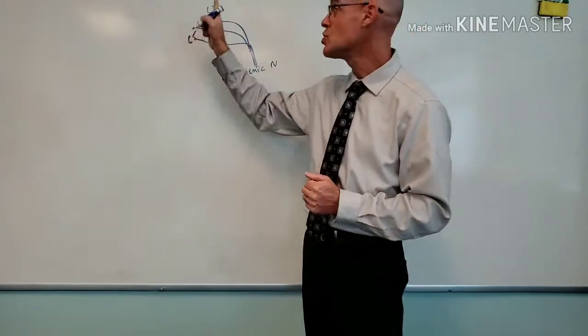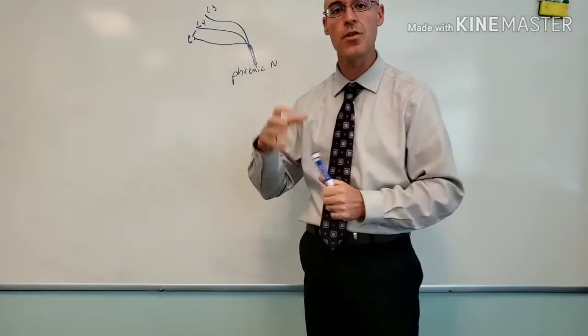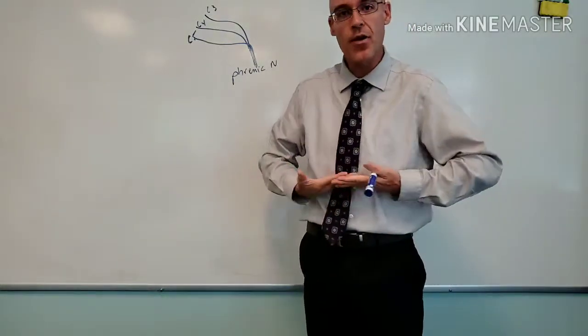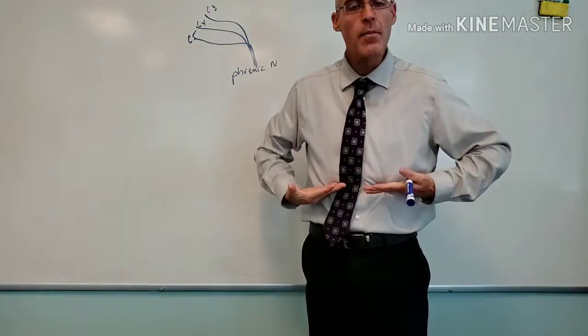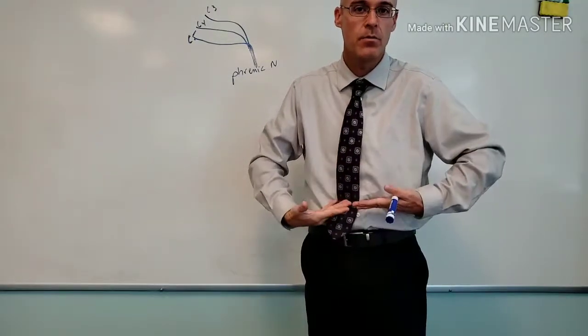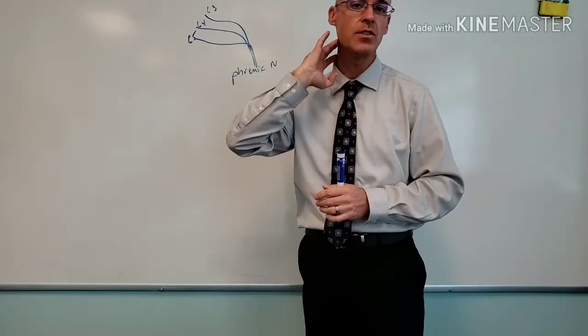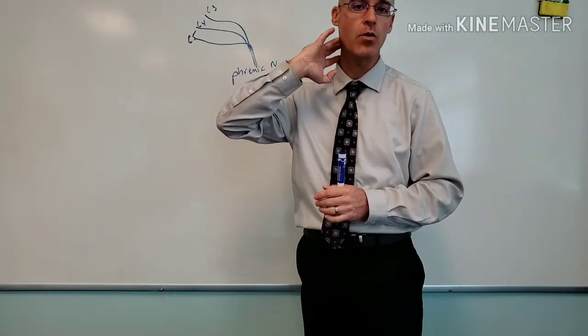That is cervical three, cervical four, cervical five, which means the phrenic nerve, even though the diaphragm is quite low, it's right below our thoracic cavity. It actually separates thoracic from abdominal cavities. Even though it's low, the phrenic nerve originates from the cervical region of the spinal cord.